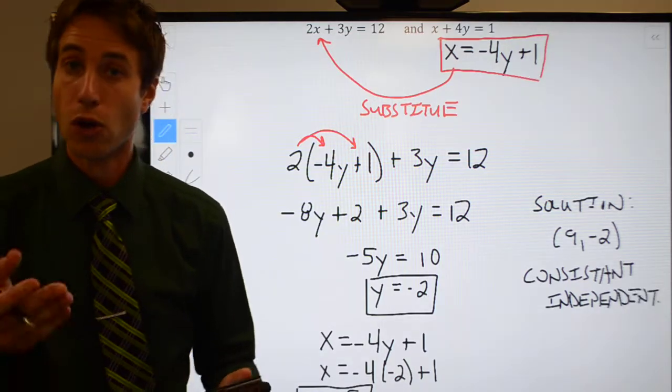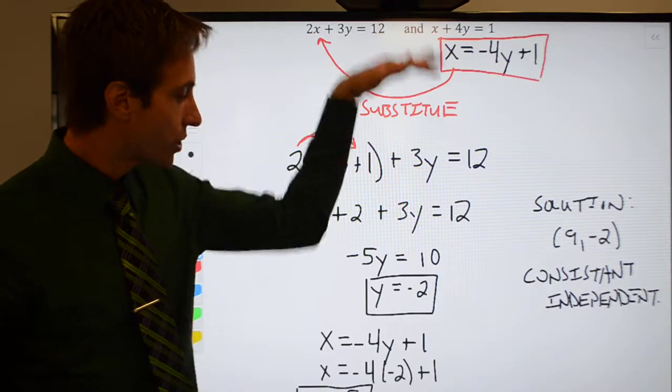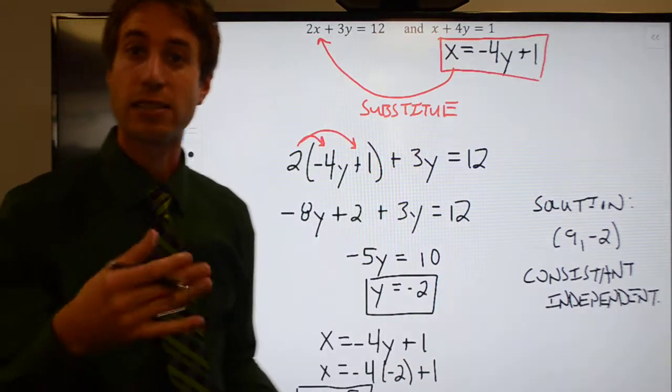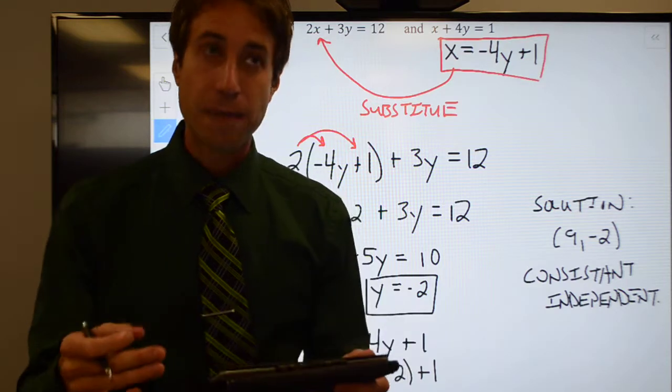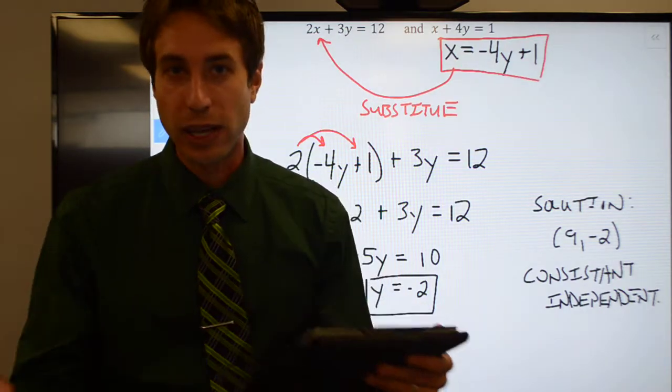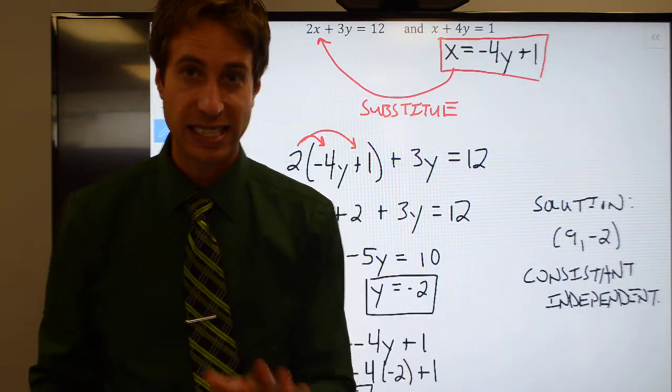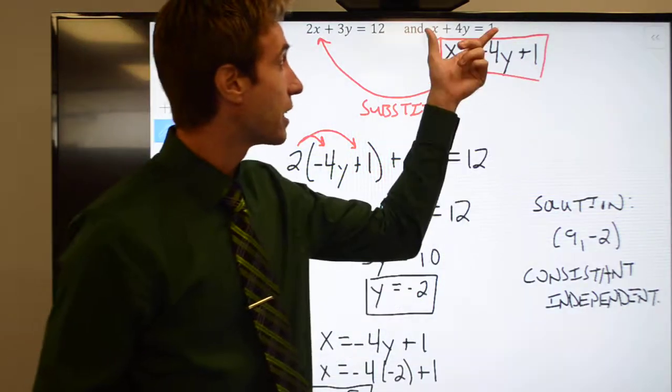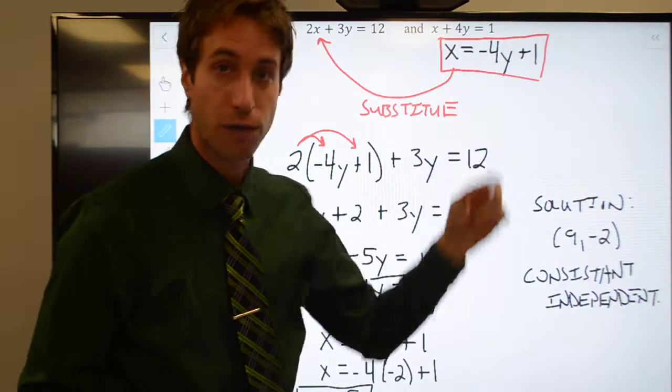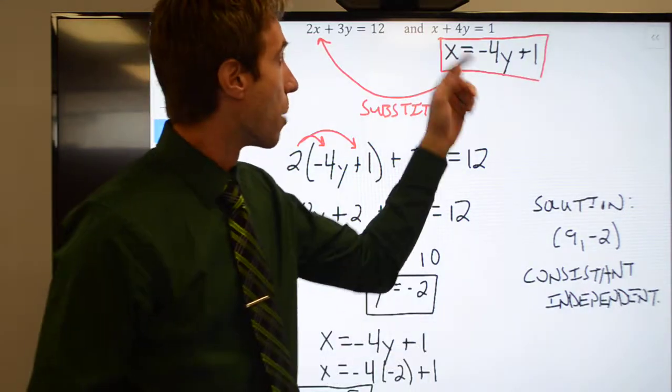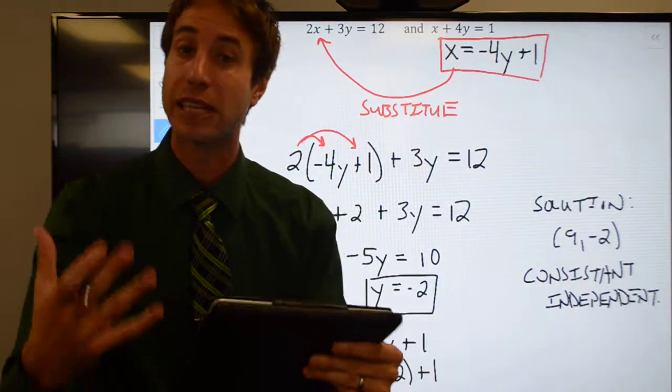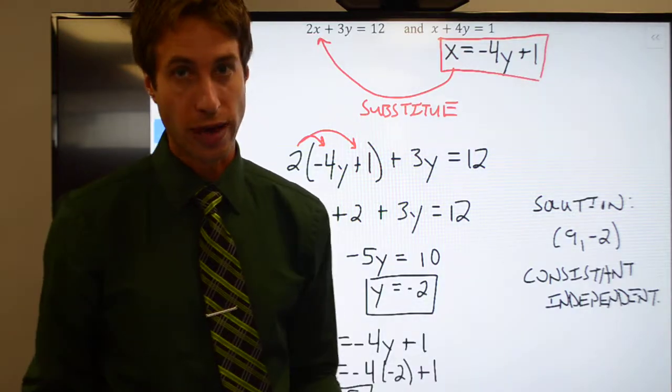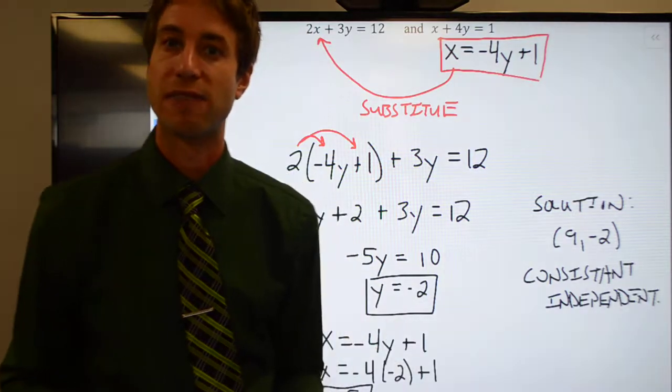Awesome. Okay. What that does is just gives you a feel for how the substitution method works. And again, I would really only use it in very limited cases. And that would be whenever you have an equation that is either already been solved for the variable or where one of the variables has a coefficient of 1 or negative 1. Making it very easy to solve for that variable, in which case substitution will be the fastest way.